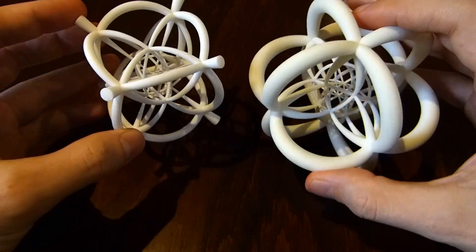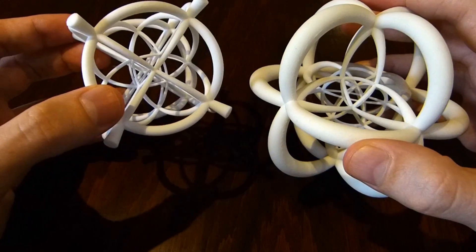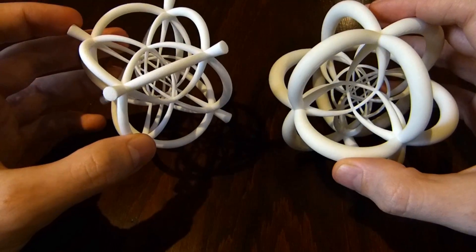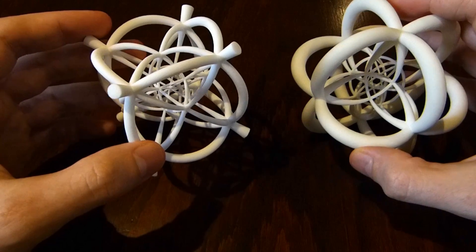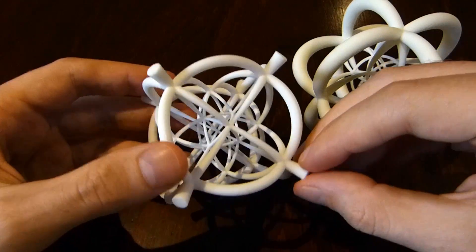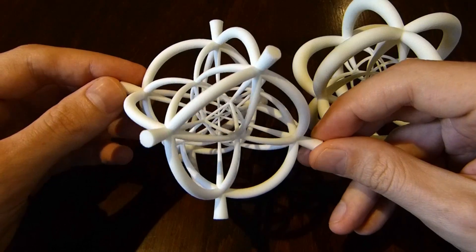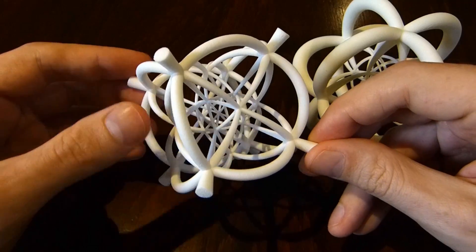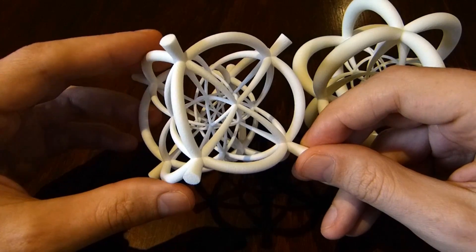So how do we get these things into three-dimensional space to print them? So we start with the 24-cell in four-dimensional space. And first thing is to radially project the 24-cell onto the unit sphere in R4, which is also called S3.